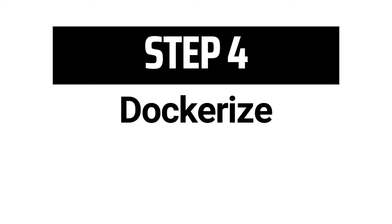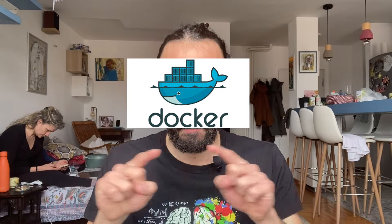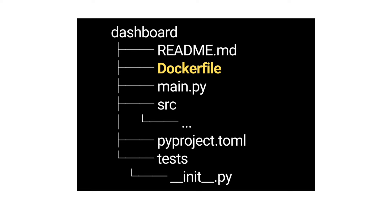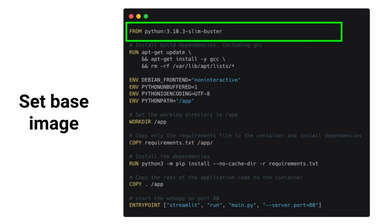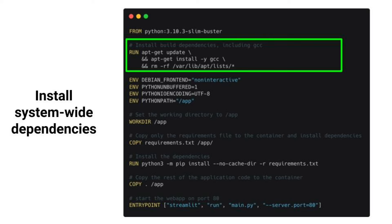This takes us to step four: dockerize your app. So far you have a working app locally, however to make sure that your app will work as expected once deployed in the production environment, you need to containerize it using Docker. The first step is to add a Dockerfile which defines the Docker image — a complete specification of the environment where your application is going to run. Our Dockerfile starts from a base layer which supports Python 3.10 and installs some system-wide dependencies, in this case a C++ compiler because one of our Python dependencies requires C++ compiling.